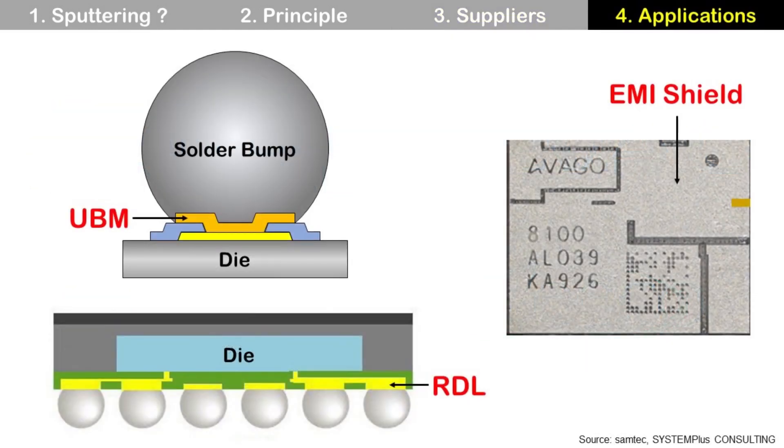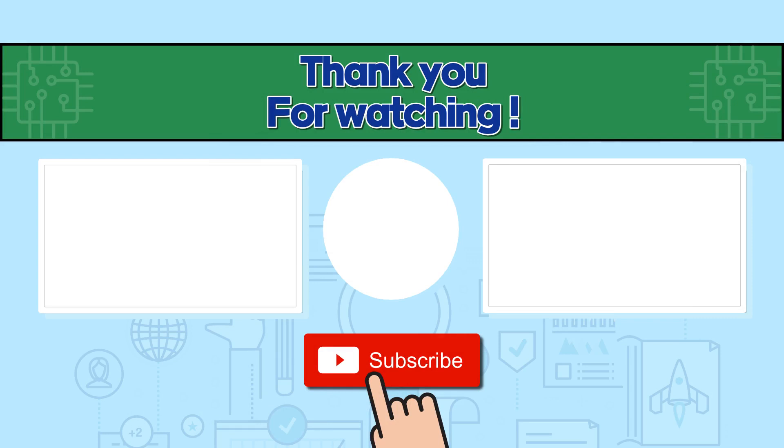Sputtering is used for UBM for wafer bumping, RDL for panels, and EMI shielding for SiP. Thanks for watching and have a nice day. Bye-bye.